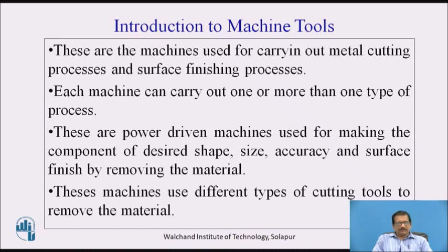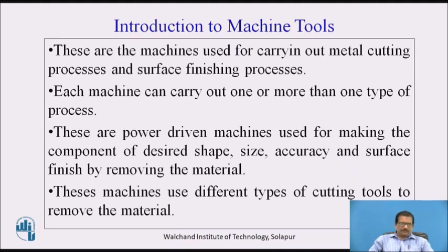Introduction to Machine Tools: these are machines used for carrying out metal cutting processes and surface finishing processes. The machines used for cutting metal are called machine tools. Each machine can carry out one or more types of processes, such as turning, facing, shaping, or forming. These are power-driven machines used for making components of desired shape, size, accuracy, and surface finish by removing material using different types of cutting tools.